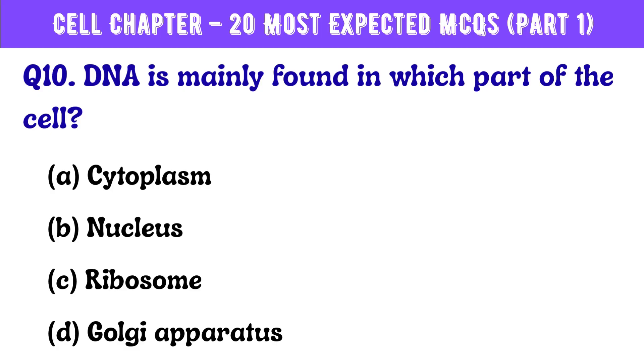Question number 10. DNA is mainly found in which part of the cell? Correct answer is option B: Nucleus.